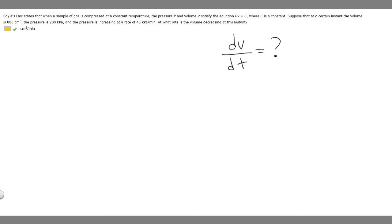Let's write down what they give us. At a certain instant, the volume is 800 centimeters cubed, so V equals 800. They also tell us that the pressure is 200 kPa, so P equals 200. And the pressure is increasing at a rate of 40 kPa per minute, so the rate of change of pressure, dP/dt, is changing at 40 kPa per minute.